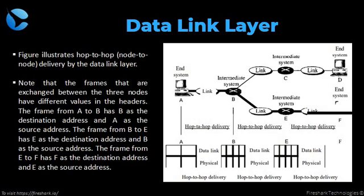Second, the data link layer at B sends a new frame to the data link layer at E. Finally, the data link layer at E sends a new frame to the data link layer at F. The frame from A to B has B as the destination address and A as the source address. The frame from B to E has E as the destination address and B as the source address. The frame from E to F has F as the destination address and E as the source address. The values of the trailers can also be different if error checking includes the header of the frame.